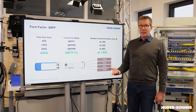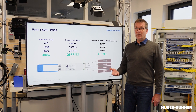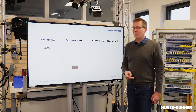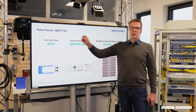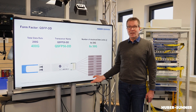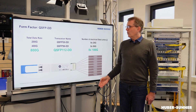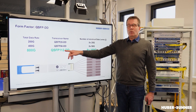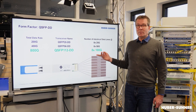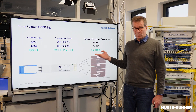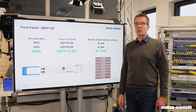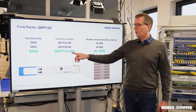If I need higher data rates than 400 Gbps, I need a different physical design — this is where QSFP DD comes into play. DD stands for double density, because now we have doubled those electrical lanes again into eight. And now with QSFP112 DD, I can do up to eight times 100 Gbps, which means 800 Gbps as a total data rate.